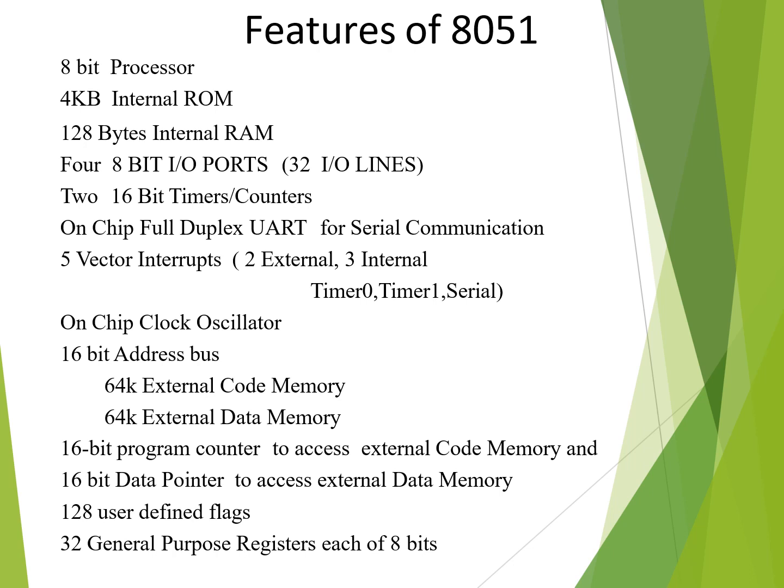The 8051 has 5 interrupts — 2 external interrupts and 3 internal interrupts. It has an on-chip clock oscillator and a 16-bit address bus, which allows it to access 64 kilobytes of external code memory as well as 64 kilobytes of external data memory. The 8051 has a 16-bit program counter and a 16-bit data pointer. It has 128 bytes for user-defined flags and 32 general-purpose registers, each of which is 8 bits.